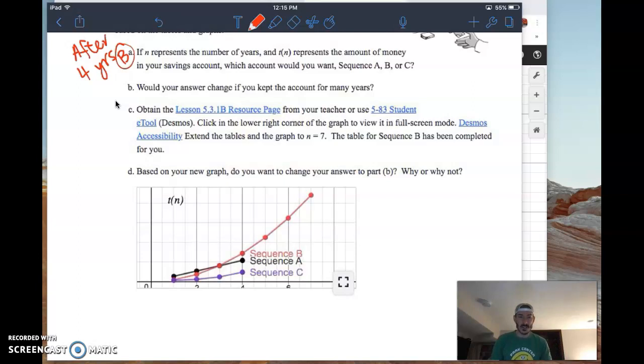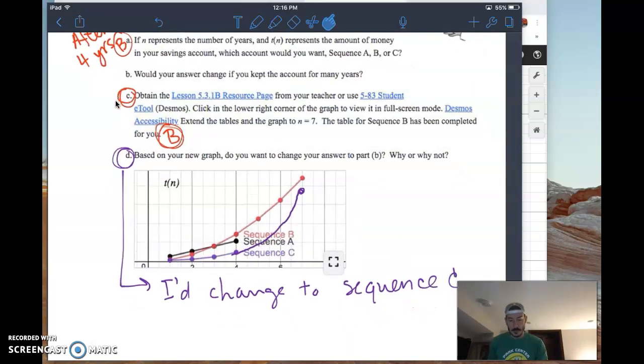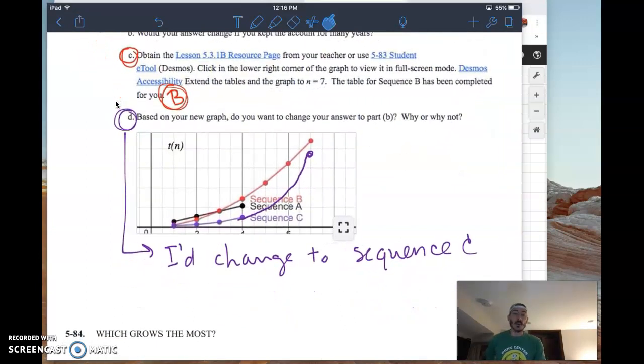That's what we want to start to formulate here. If we only get to see the red line, then it looks like B is really good. However, once we start to fill in that exponential model, that purple line looks like it's going to start to catch that red line pretty quickly. So if I had to keep this thing for many, many, many years, I'd change to sequence C. Because sequence C is going to grow very, very quickly and catch sequence B.